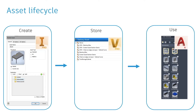An asset goes through a typical lifecycle as follows. The asset itself is created within Inventor Professional. It would then be stored within Vault Professional, or on a local or network directory. And then finally, within the AutoCAD Architecture application, those assets are used.